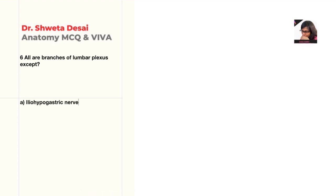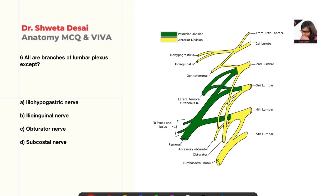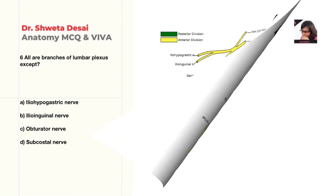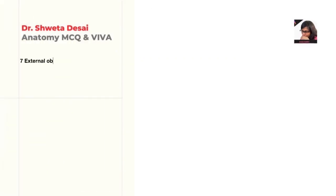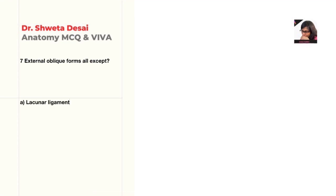Next: all are branches of the lumbar plexus except — iliohypogastric, ilioinguinal, obturator, or subcostal nerve? The correct answer is subcostal nerve; it is not a branch of the lumbar plexus.